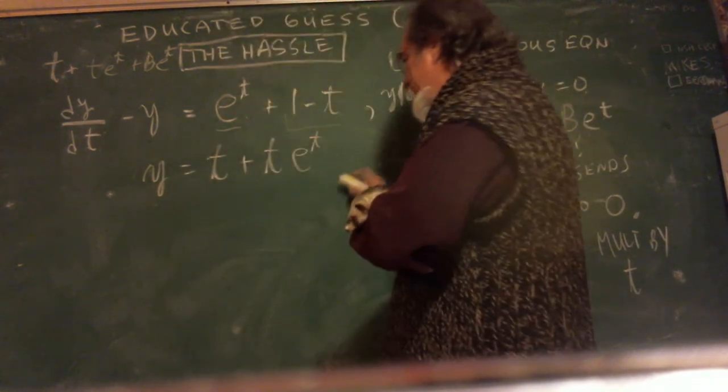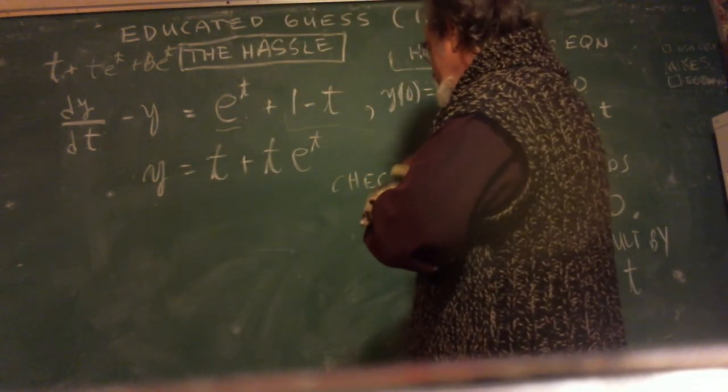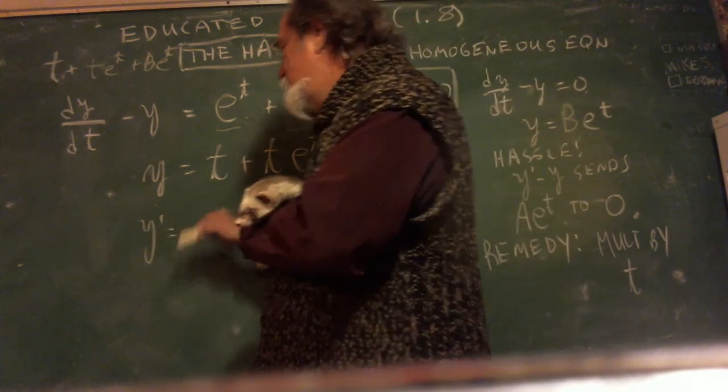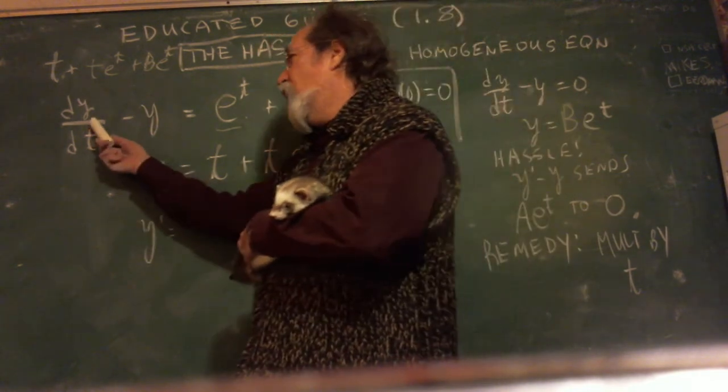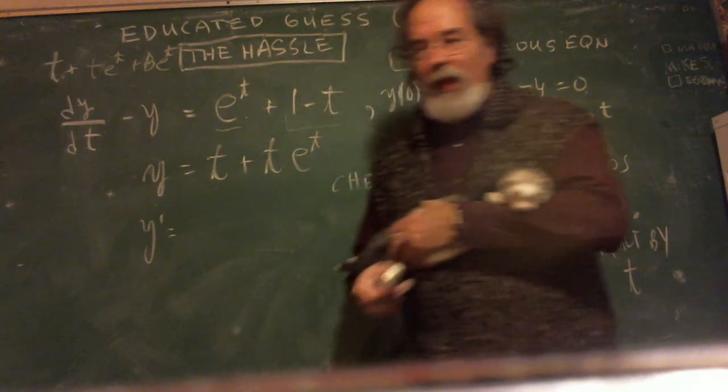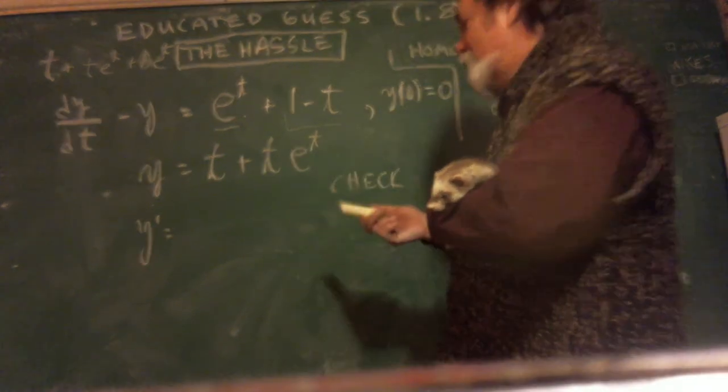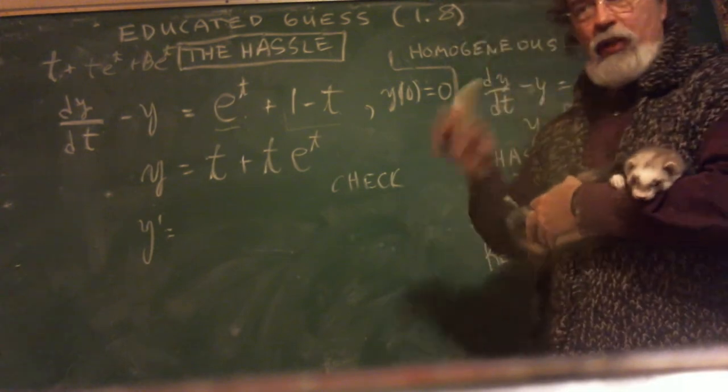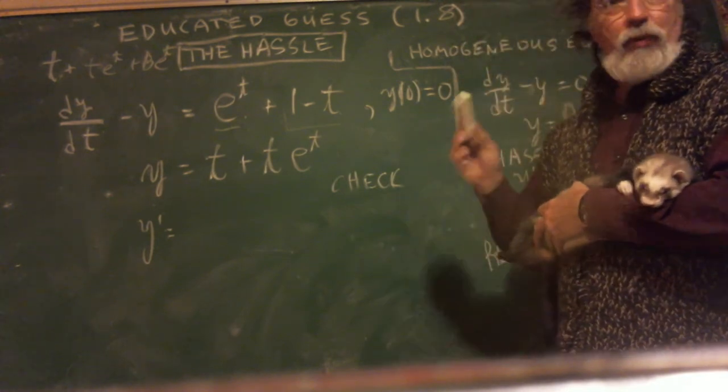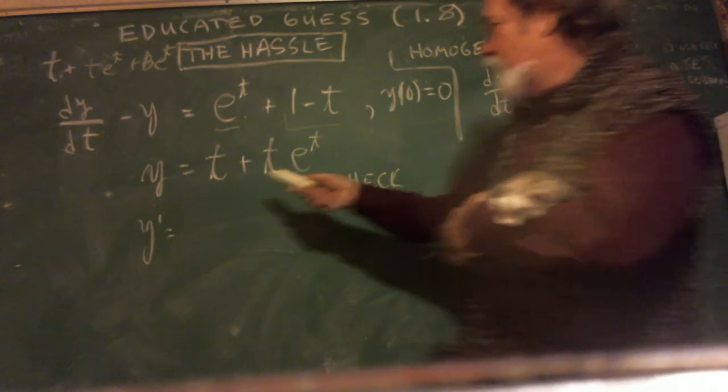And now we're going to check. So I take the derivative. y prime. And I hope you're very comfortable with dy/dt and y prime. They're the same. And I know I'm switching around. The book does this too. They'll do a whole example with y primes, and the next example they'll do dy/dt's. Anyway, so now I'm taking a derivative.